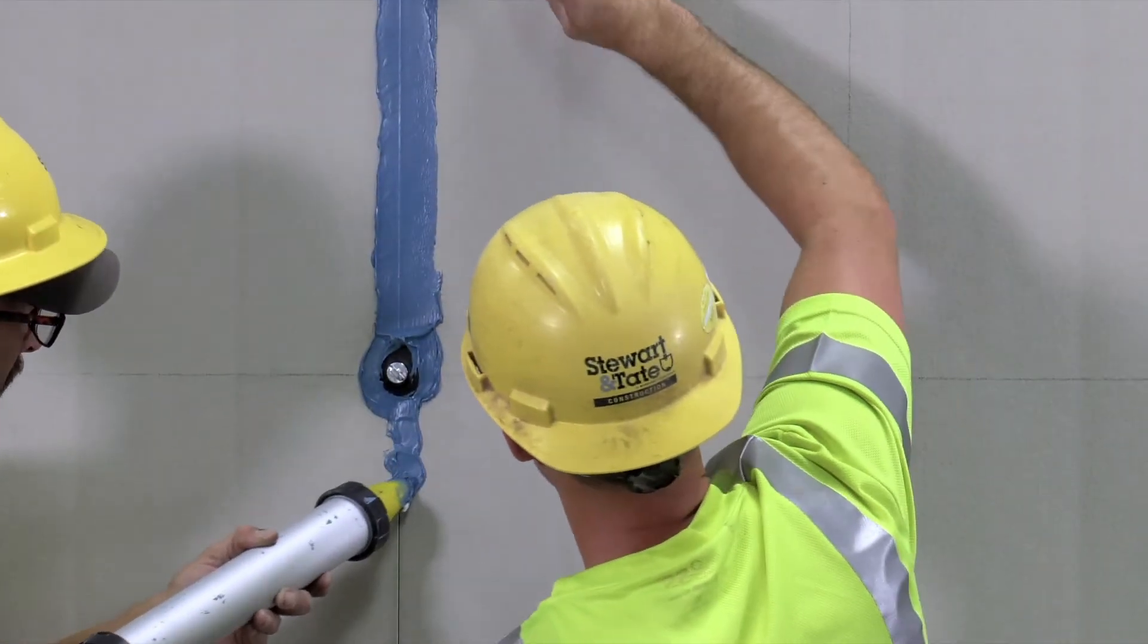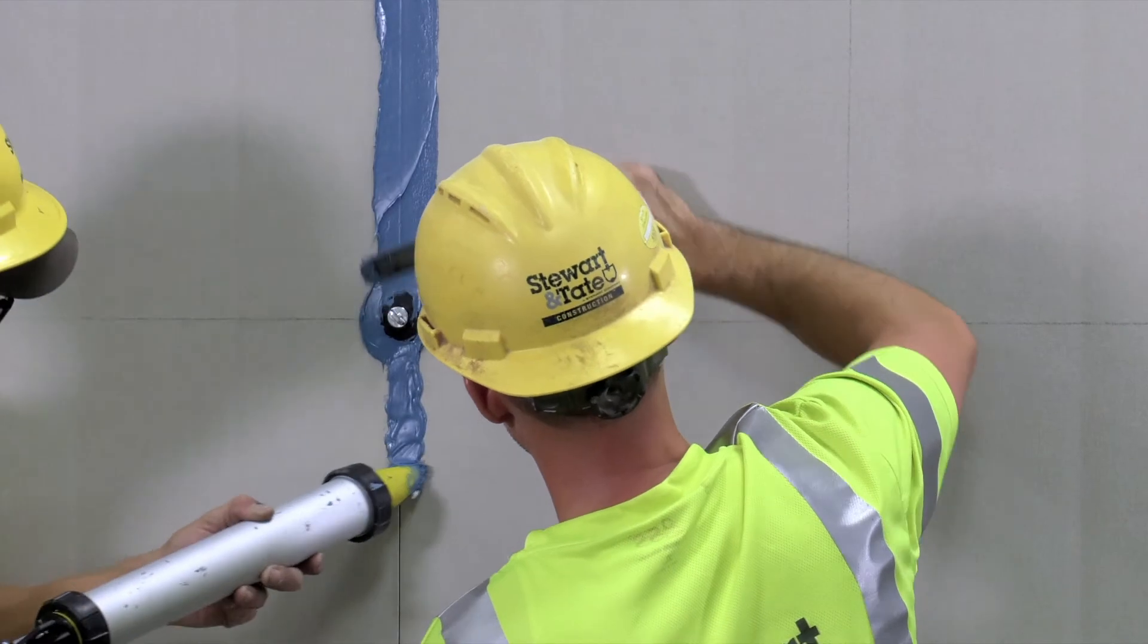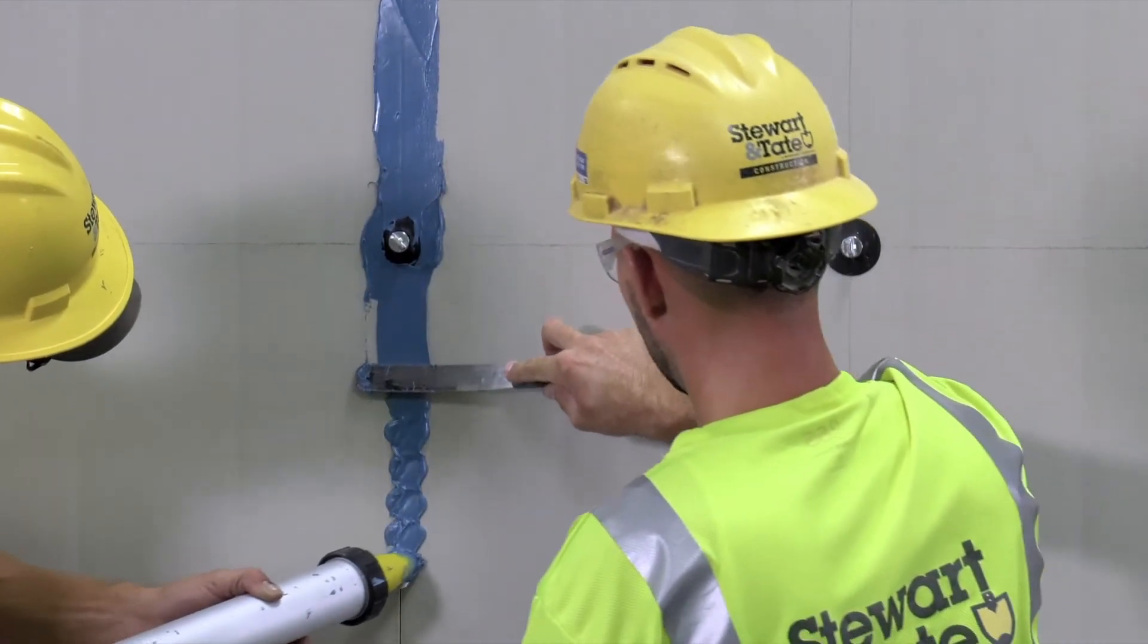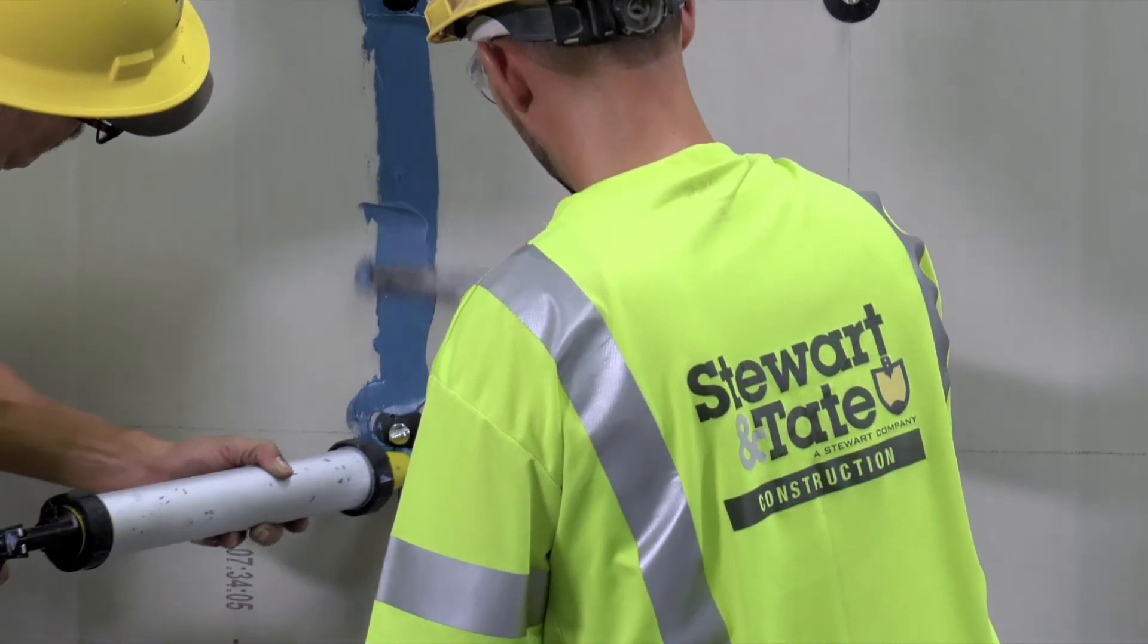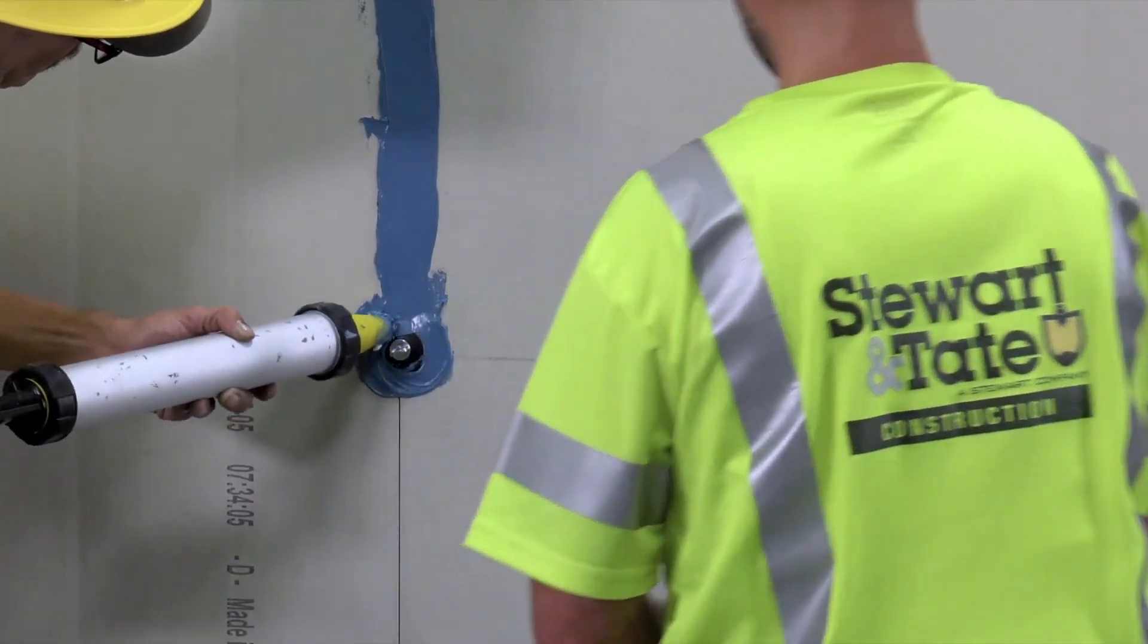If the polyiso will serve only as the insulation layer and a separate barrier is used, sealing of seams may not be required. Use of joint treatments is at the discretion of the specifier.